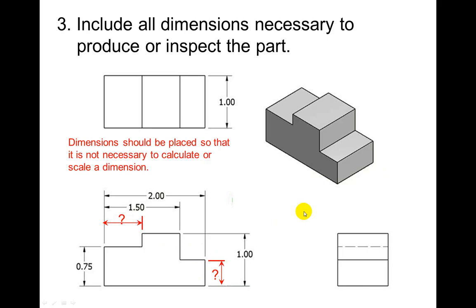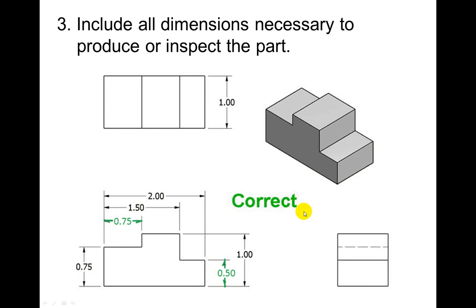Dimensions should be placed so that it is not necessary to calculate or scale a dimension. That's why it would be incorrect. The correct way is to show each of the dimensions. Notice we have right here our length. We have our height.